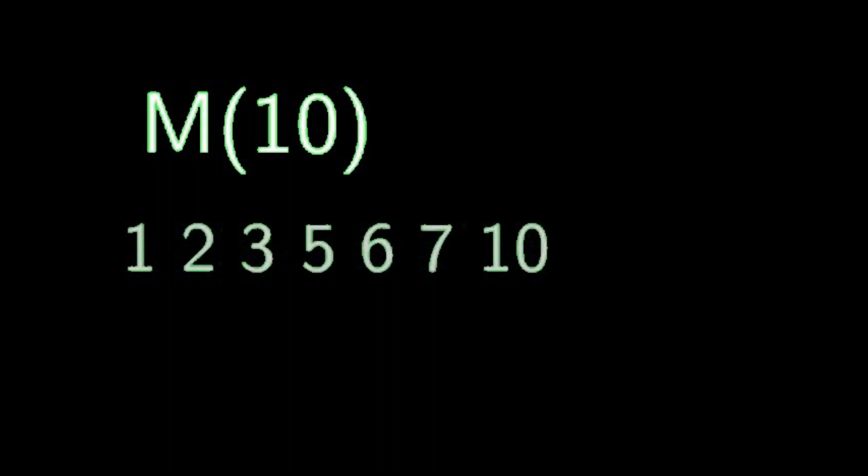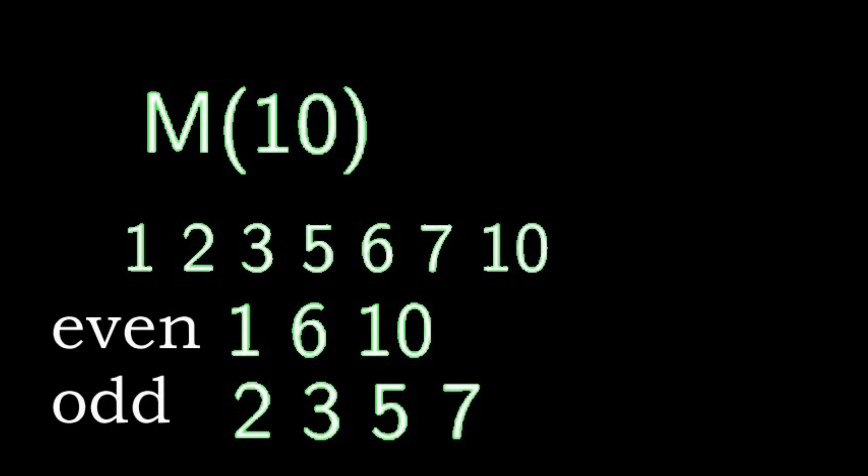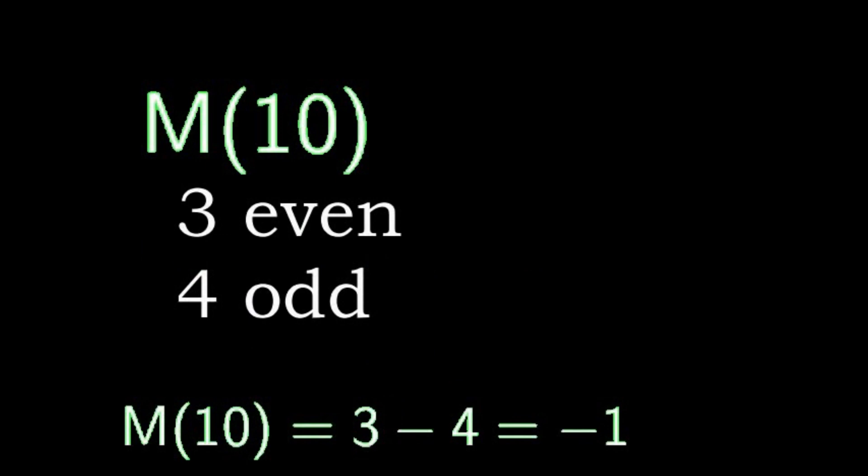Numbers with even prime factors are 1, 6, and 10. 1 has 0 prime factors and 0 is an even number. 2, 3, 5, and 7 are all prime and they have 1 prime factor so that's an odd number of prime factors. So 3 minus 4, Mertens function of 10 is negative 1.